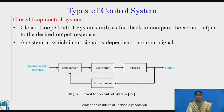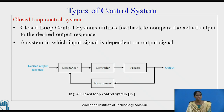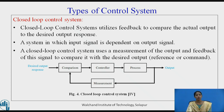A closed loop control system utilizes feedback to compare the actual output to the desired output response. It is a system in which the input signal is dependent on the output signal. The measurement device — i.e., feedback — is given to the comparison element, and then the controlled input is given to the controller. A closed loop system uses a measurement of the output and feeds back the signal to compare it with the desired output, i.e., reference or command.